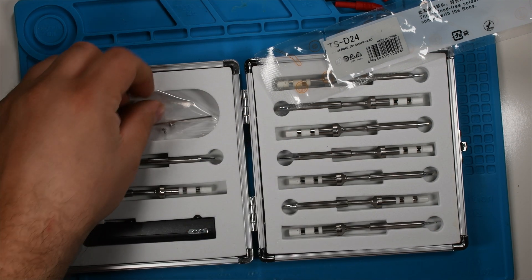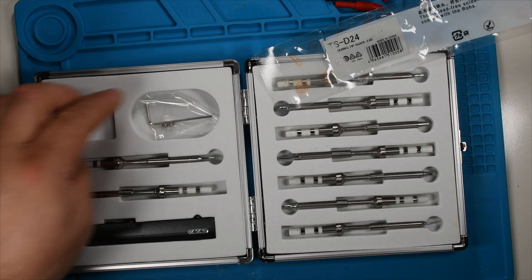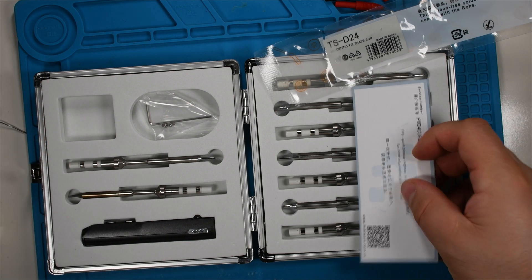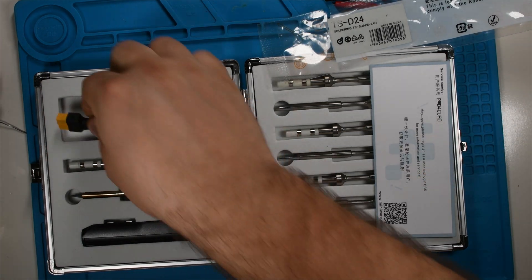The small Allen key is there to fix the soldering tips. You don't have to fix the soldering tips every time, but it is necessary from time to time.